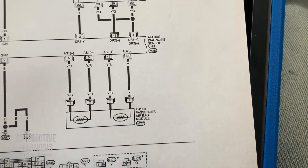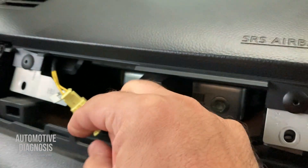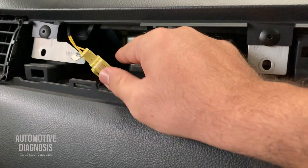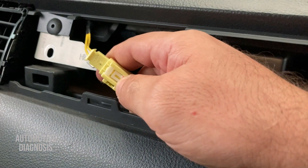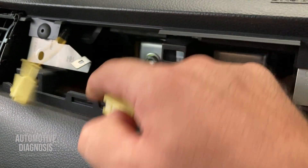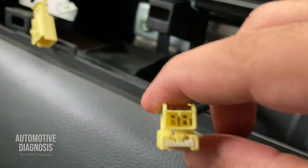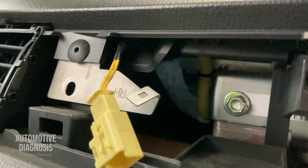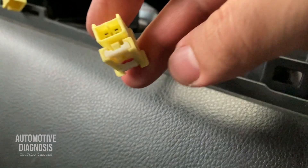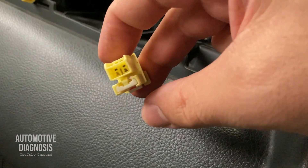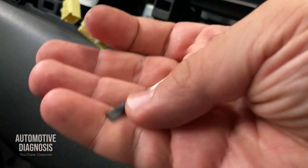Here is the passenger airbag connector. I've removed this part of the dash to reach the connector itself. There is a release lock here — I need to pull it back and disconnect the connector. After disconnecting, you have two parts: one side goes to the airbag itself, which is just down there, and on the female side of the connector going to the airbag control module, I need to insert the dummy resistor.